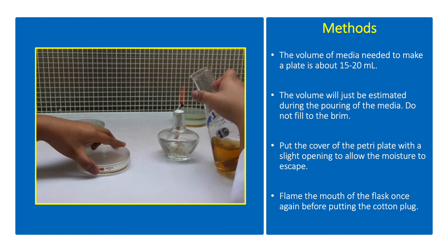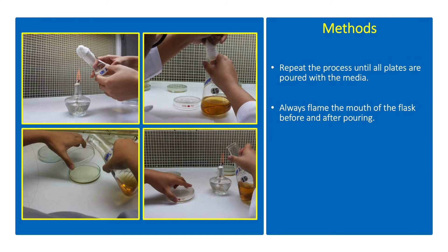Flame the mouth of the flask once again before putting the cotton plug. Repeat the process until all plates are poured with the media. Always flame the mouth of the flask before and after pouring.